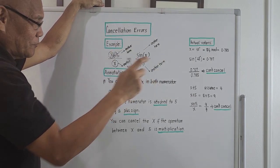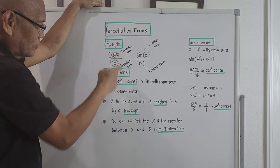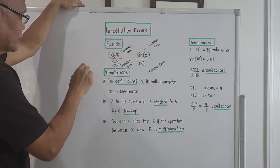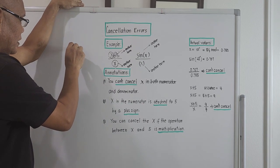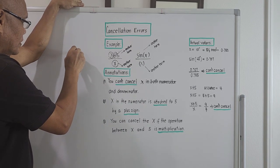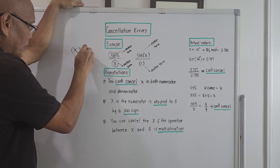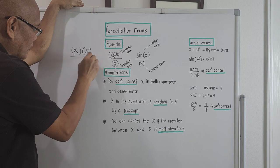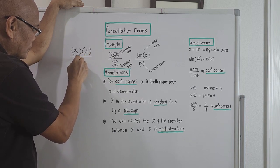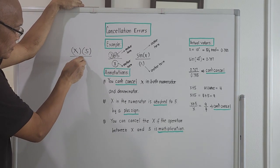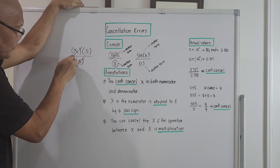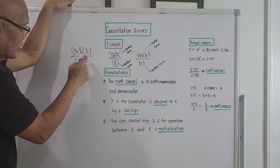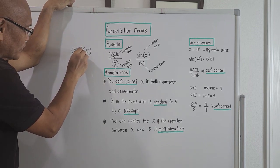The only time you can cancel x in the numerator is if we rewrite the equation as something like x multiplied by 5 over x. We can cancel x here because the operation on the numerator is multiplication. But if there is a plus sign in the numerator, you cannot cancel it.